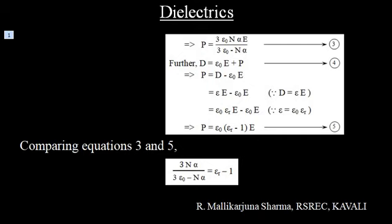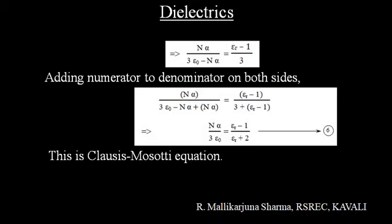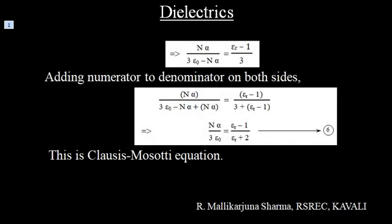Comparing equations 3 and 5: N alpha divided by (3 epsilon-naught minus N alpha) is equal to (epsilon_R minus 1) divided by 3. Rearranging, this gives N alpha divided by (3 epsilon-naught) equals (epsilon_R minus 1) divided by (epsilon_R plus 2). (Equation 6) This is the Clausius-Mossotti equation.